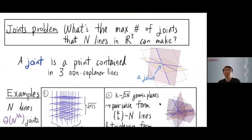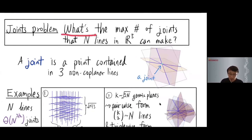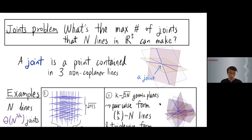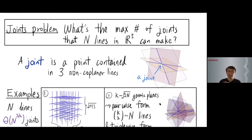Today I'm going to talk about the joints problem. The traditional version asks: what is the maximum number of joints that n lines in three dimensions can make? By a joint, I mean a point passed through by three lines such that the three lines are not all contained in some plane.